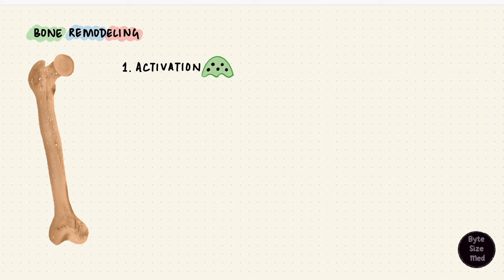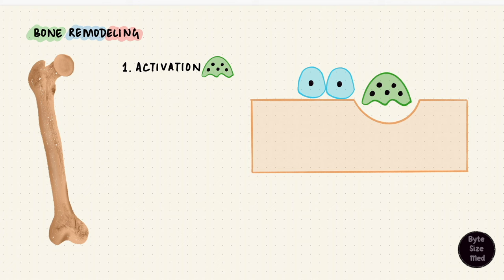What do they do? Resorb bone. So that's the next step. Bone resorption. Then those osteoclasts undergo apoptosis. We don't need them anymore. The next step is reversal. Now we move from resorbing bone to forming bone. The cell we need for that is the osteoblast.